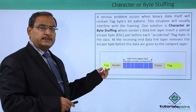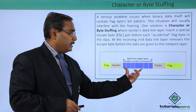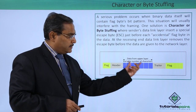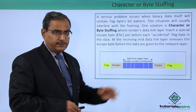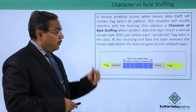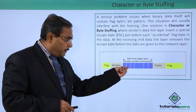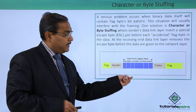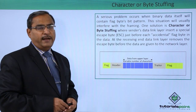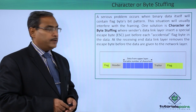What is this starting flag? What is this header? This part is the variable number of characters — that is, the data from the upper layer — there is a payload, a trailer, and the last one is the flag. Now, what will happen if this particular bit pattern within this data matches with the flag bit pattern? That is a very serious problem.